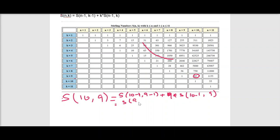Here you can see S(9,8) + 9 × S(9,9). The value of S(9,8) is 36, and S(9,9) is 1. It is equal to 36 + 9, which is 45.